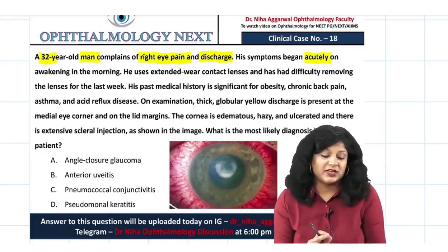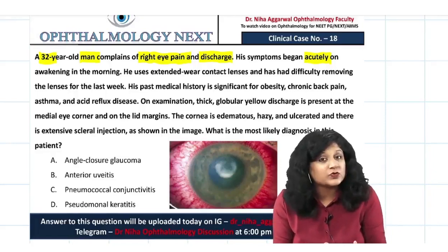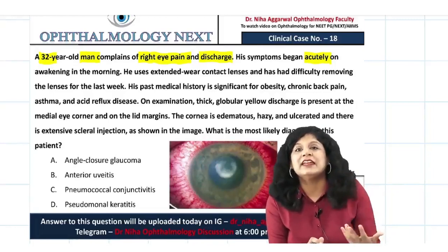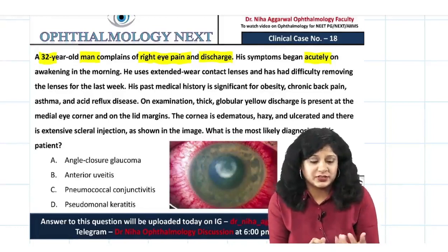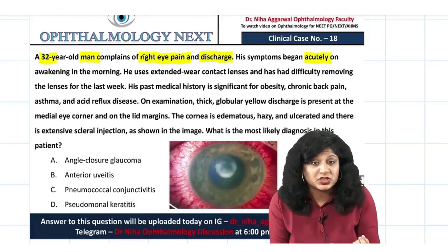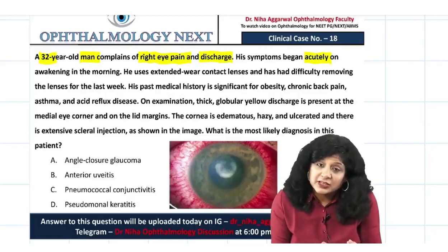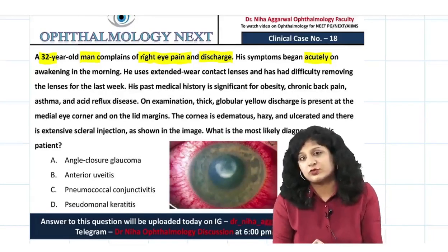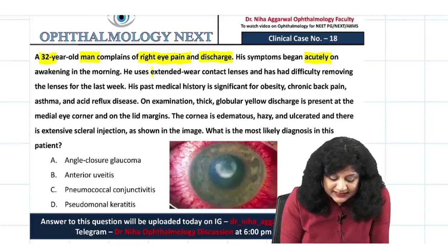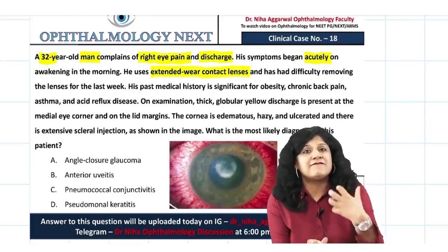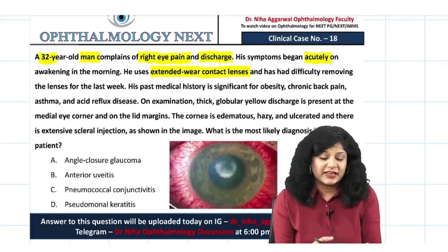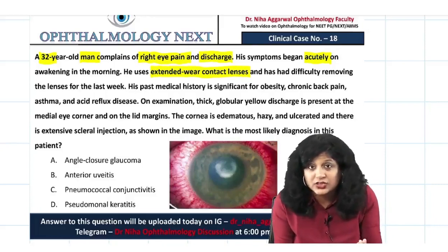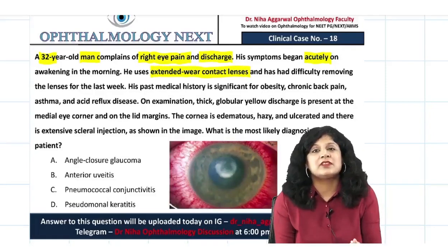It's a painful condition with discharge, so maybe something related to infection. This is the approach you should follow: how you start thinking the moment you start reading the question. You have to consider the age of the patient, the gender, whether it's acute or chronic, painful or painless, and any associated symptoms. He uses extended wear contact lenses — this is a very important part of the question. The discharge helps you understand the infective nature of this condition, and it is associated with contact lens use.